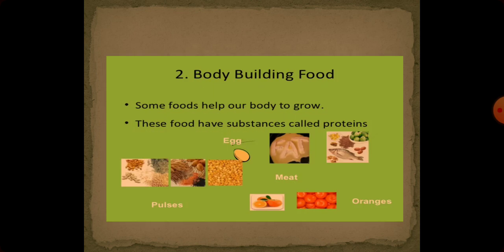Number two is body building food. Body building food helps our body to grow. The food items we are seeing on the screen all have proteins. We should eat all these food items every day, like pulses, egg, meat, and oranges.